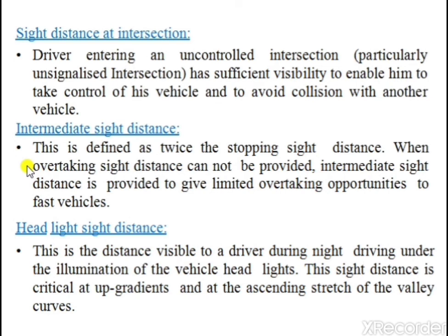Intermediate sight distance is defined as twice the stopping sight distance. When overtaking sight distance cannot be provided, intermediate sight distance is provided to give limited overtaking opportunities to fast-moving vehicles. In conditions where it is not possible to increase road width or provide full OSD, intermediate sight distance is used, allowing limited overtaking only if no vehicle is coming from the opposite direction.